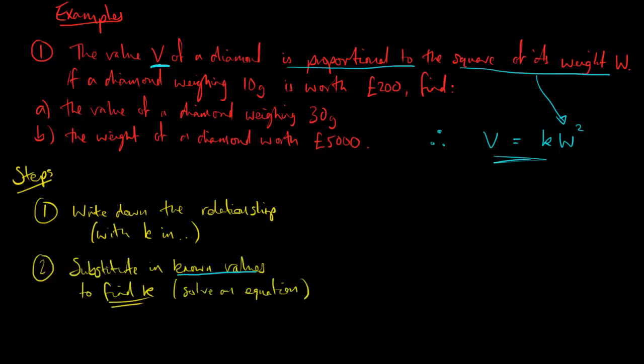And remember the next step is to substitute in the known values. This will let me work out what k is. In this case the known values are that when the weight w is 10 the value v is 200. So I'll just simply substitute these into the equation or into the formula that we've just worked out. And I get 200 is equal to k times w squared which is 10, so 10 squared.